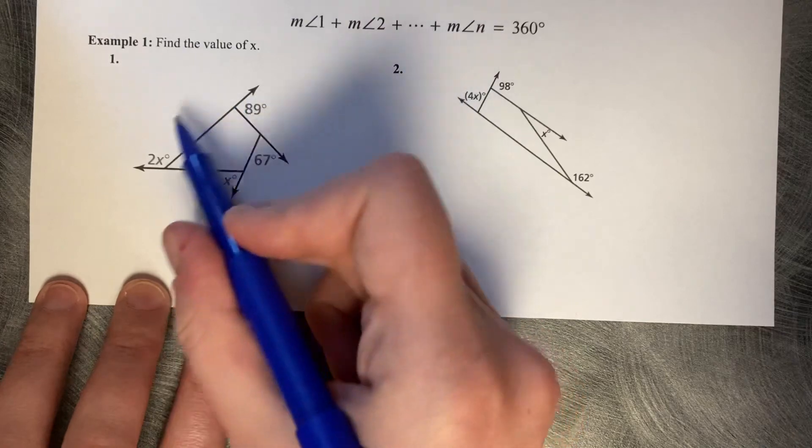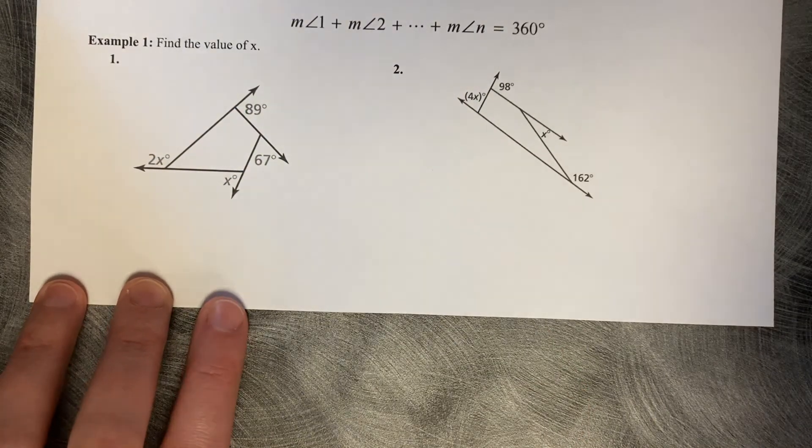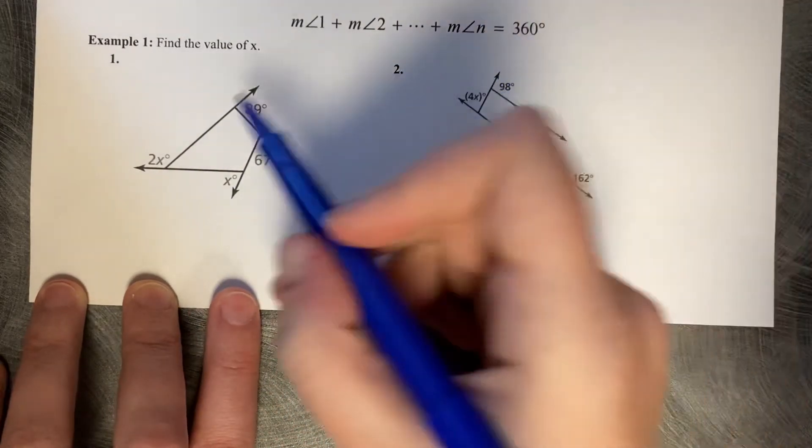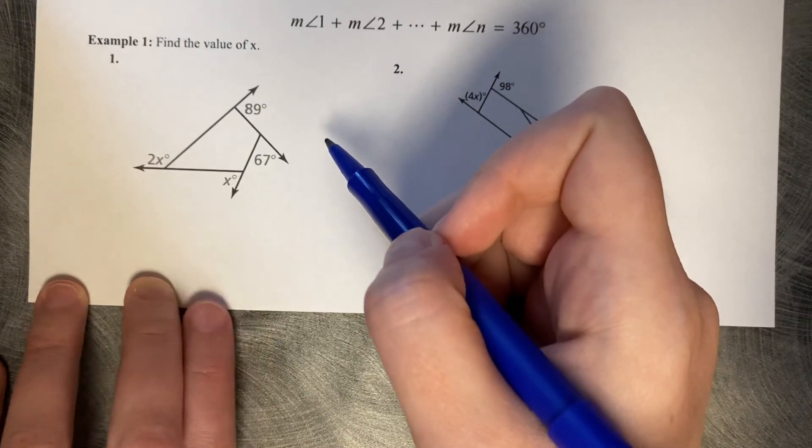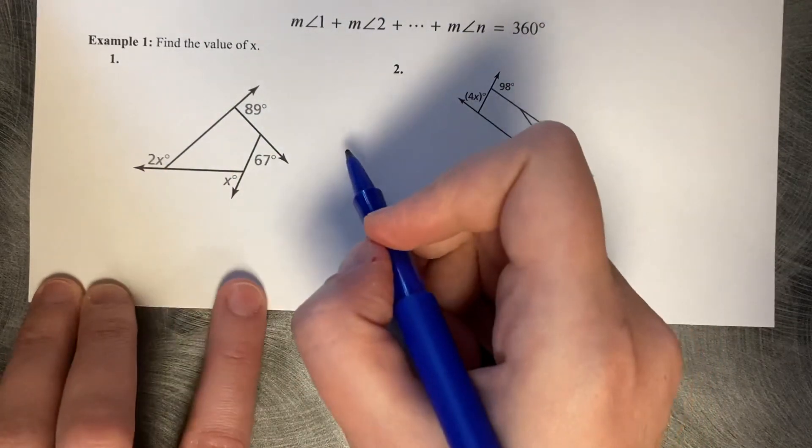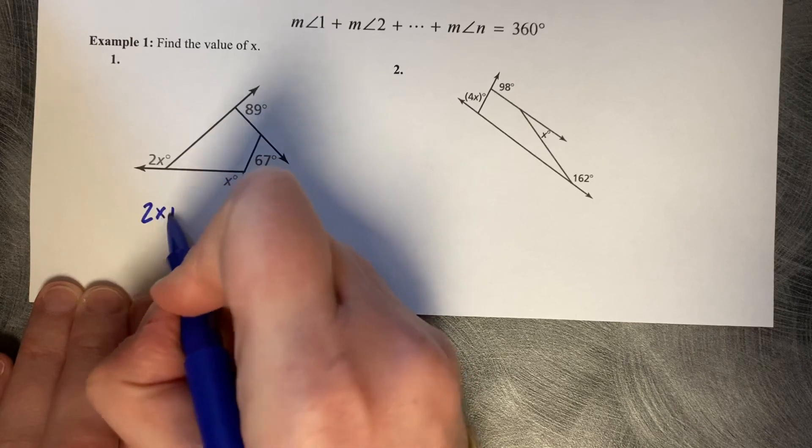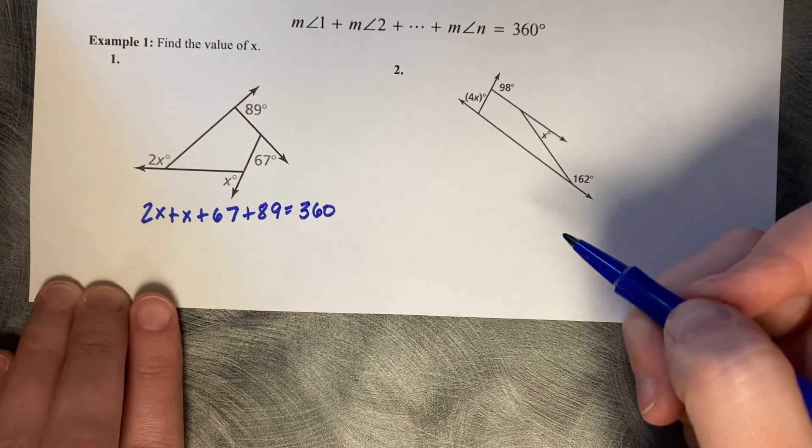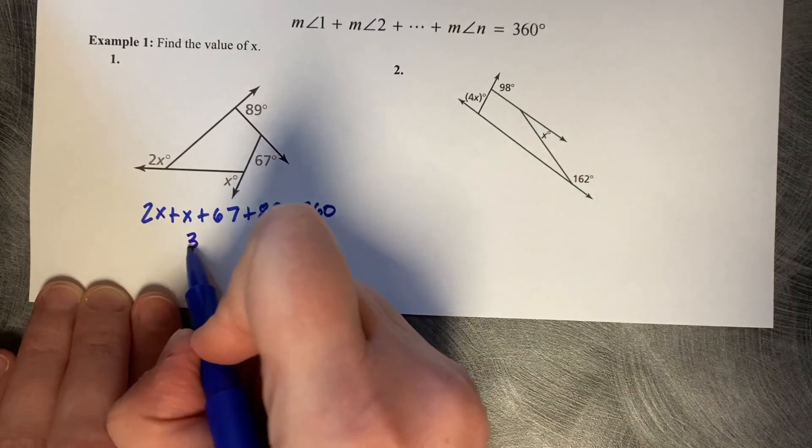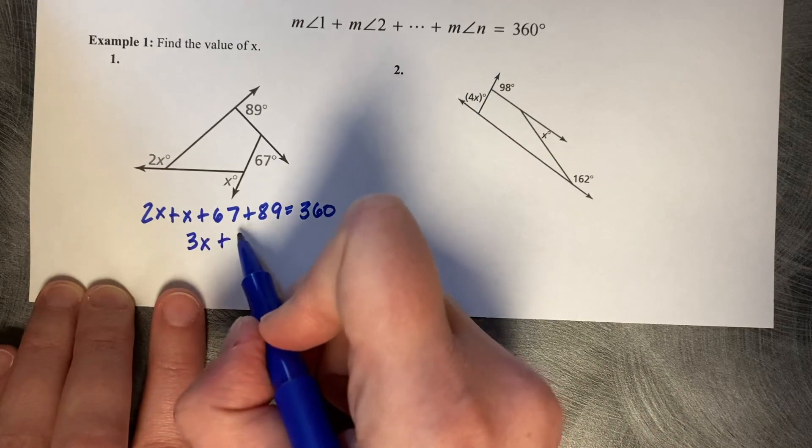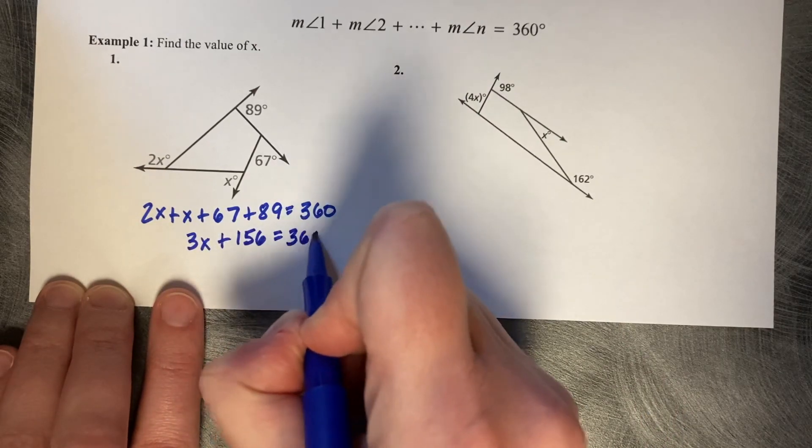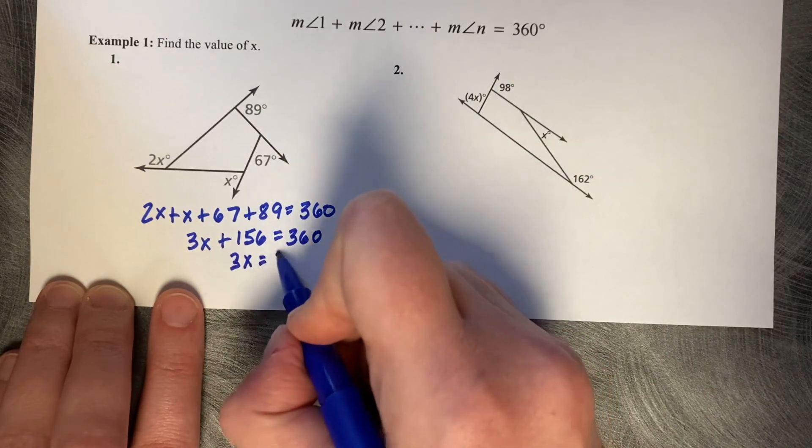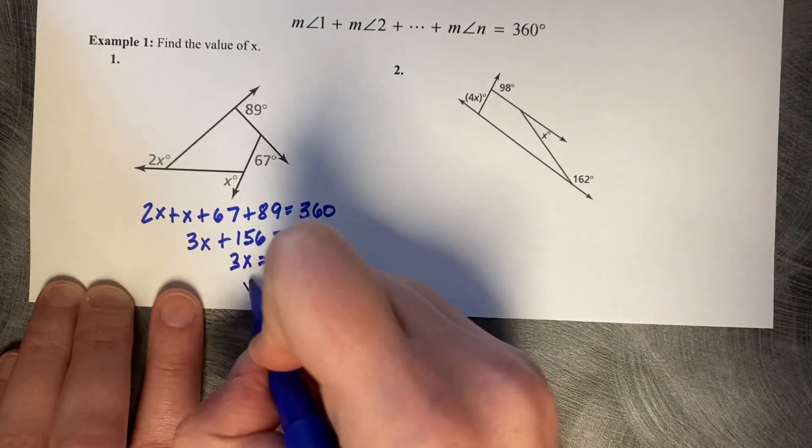This is a quadrilateral, but it doesn't matter that it's a quadrilateral. All of the exterior angles of any polygon add to 360. So we're going to make our equation by adding them to 360. 2x plus x plus 67 plus 89 is 360. 2x and x is 3x's. 67 and 89 is 156. Minus 156. 3x equals 204. Divided by 3 and x equals 68.